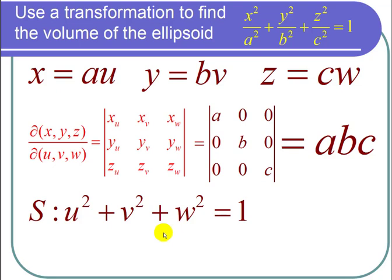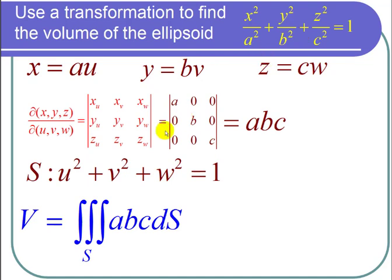So now we're ready to put this together and use the change of variable formula that says that the volume, which is the triple integral over this solid, is equal to the triple integral over our new solid S times the Jacobian, which is the absolute value of a times b times c. a, b and c are assumed to be positive, so absolute values don't do anything to positive numbers.